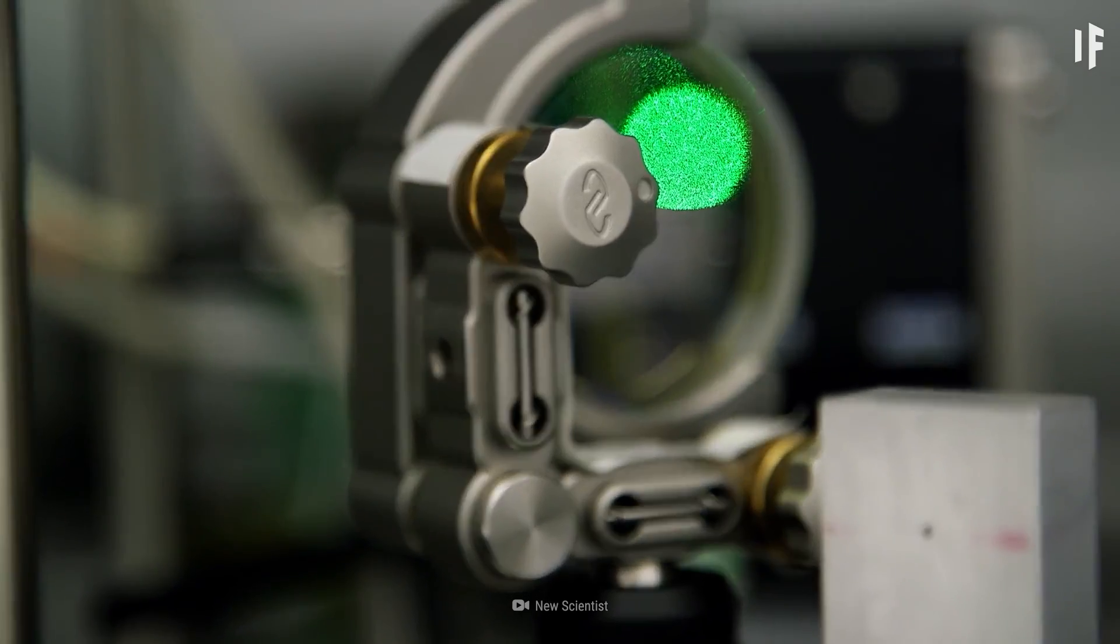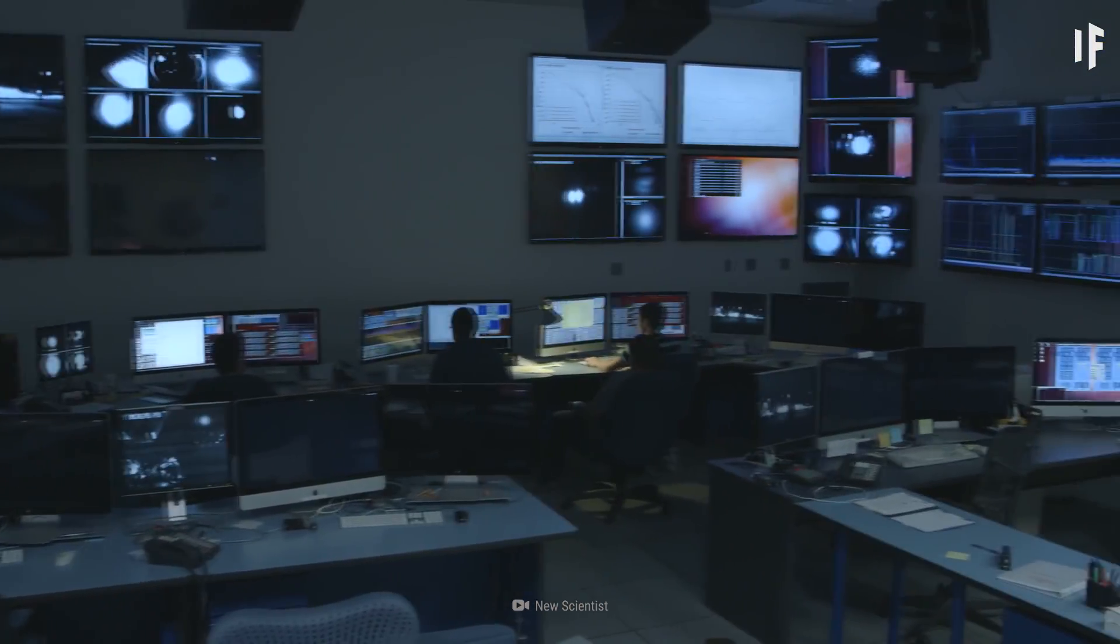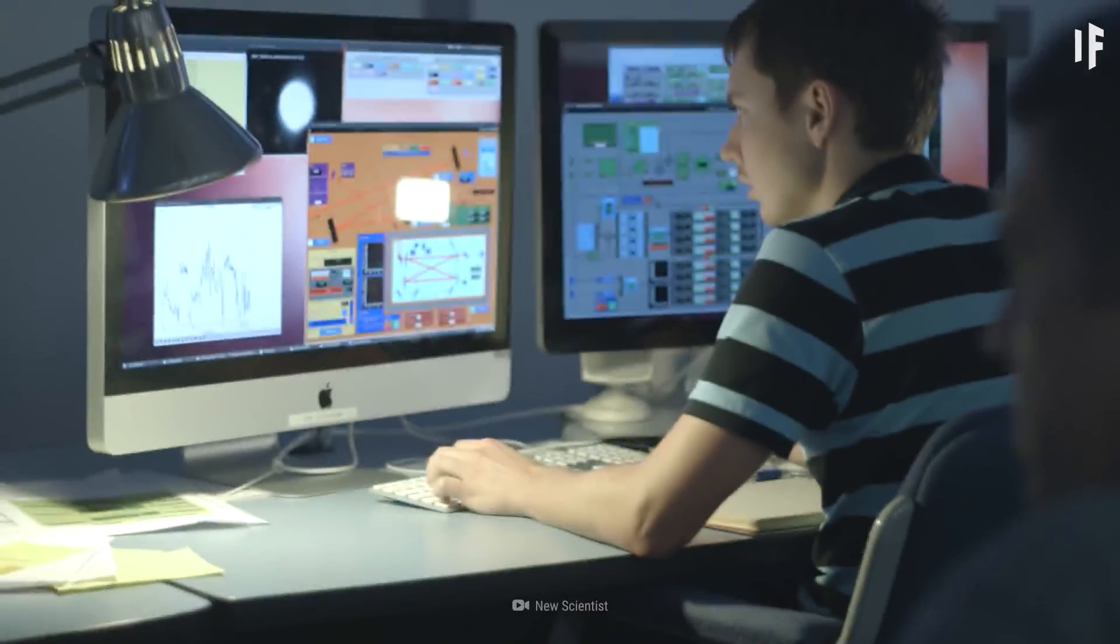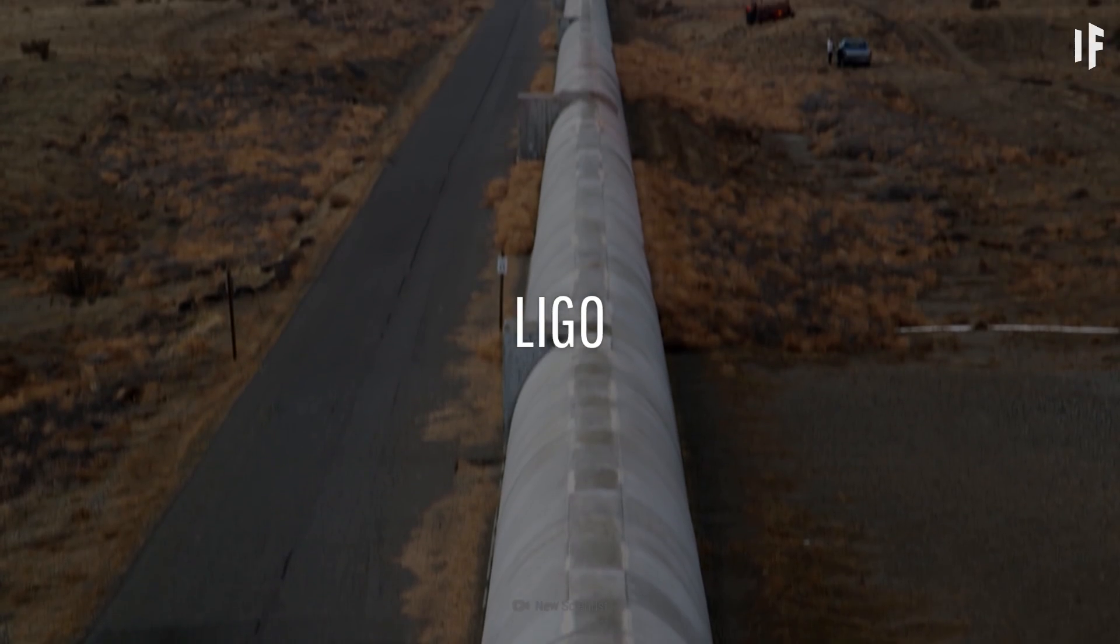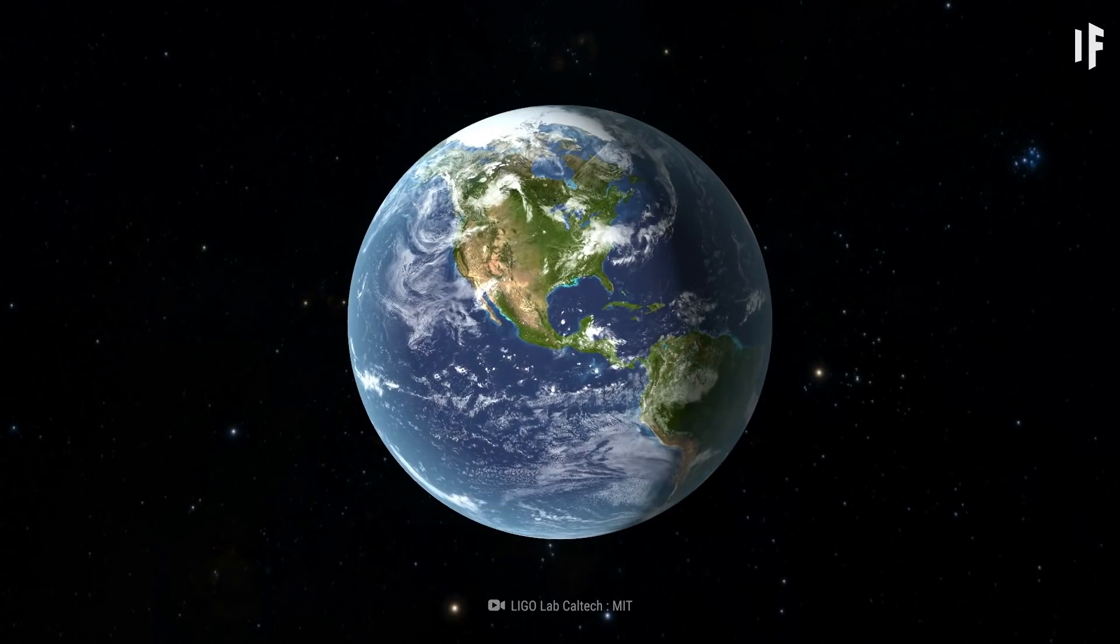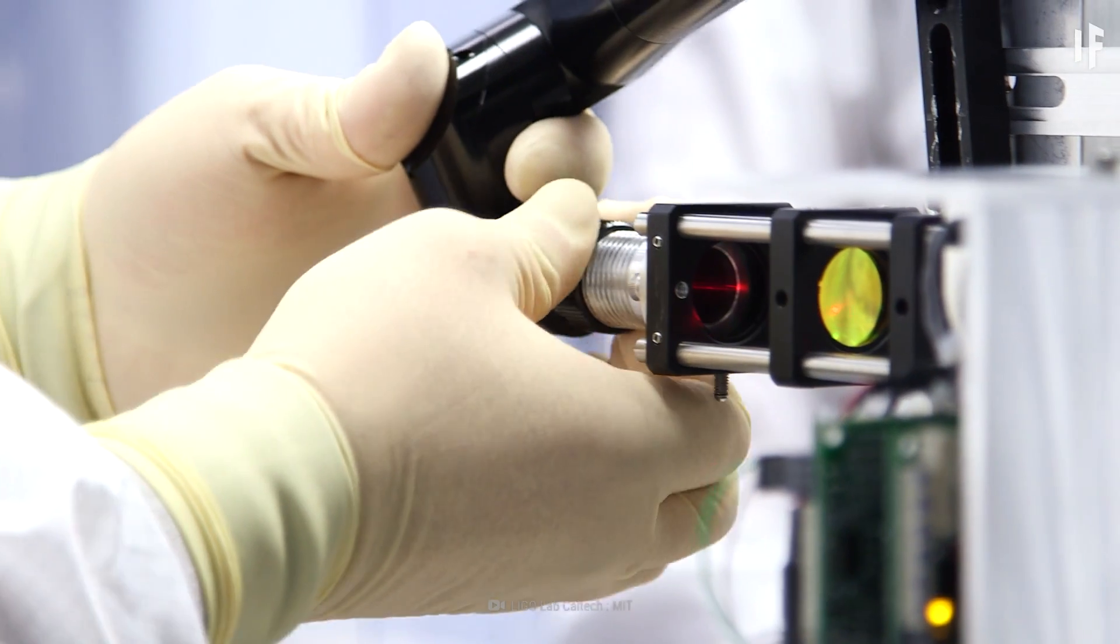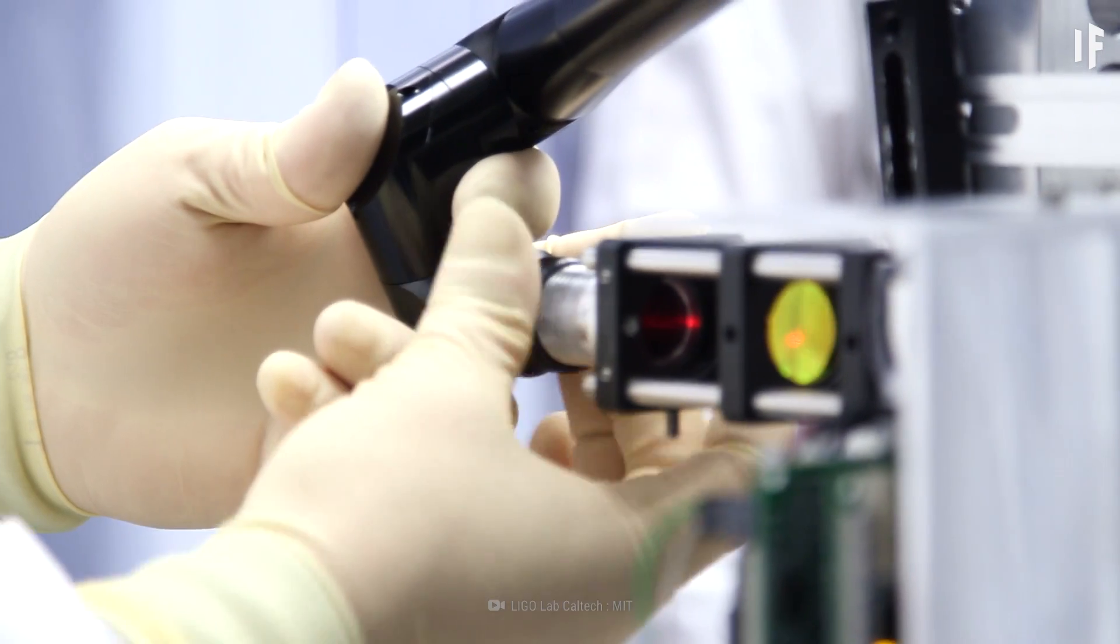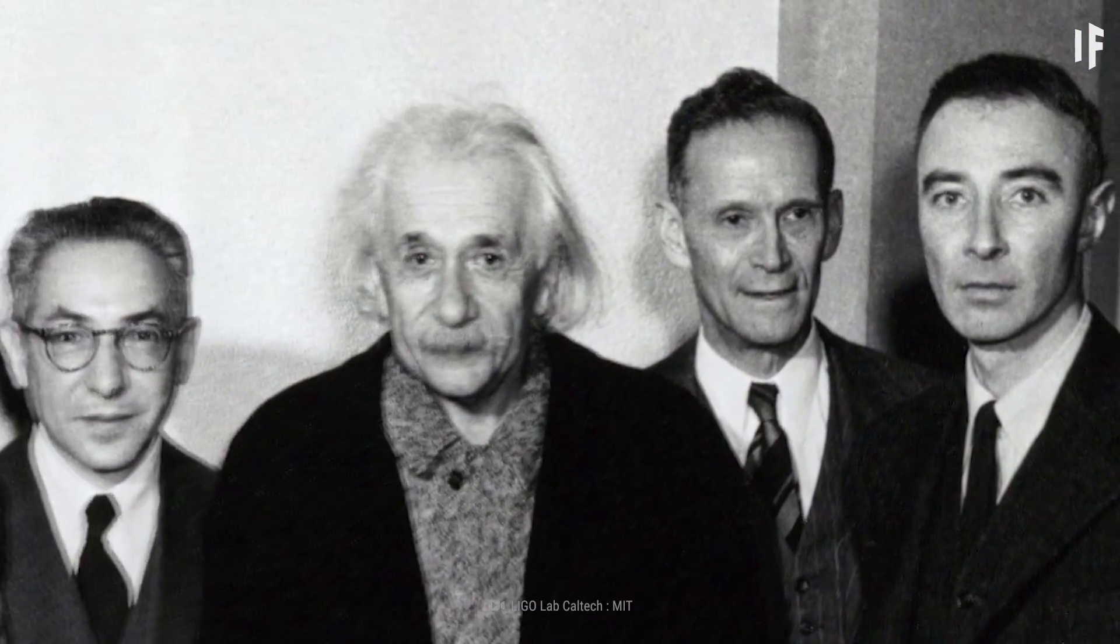Thanks to incredible developments in atomic measurement, scientists in Washington and Louisiana at the Laser Interferometer Gravitational Wave Observatory, or LIGO for short, were able to detect and measure the first-ever gravitational waves here on Earth in 2015. This was a historic moment in science, as it was the first definitive proof of Einstein's theory of relativity.